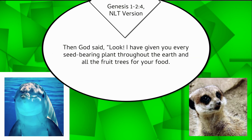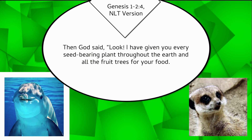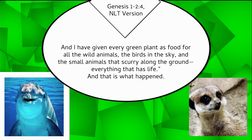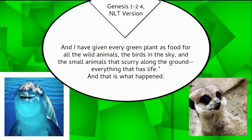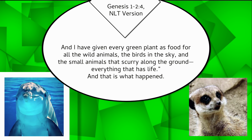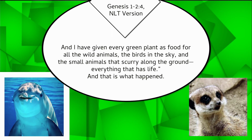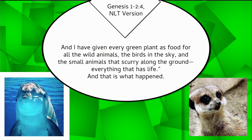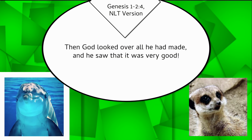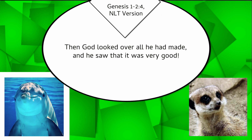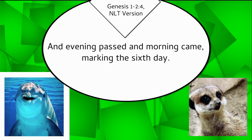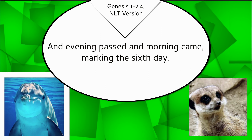Then God said, Look, I have given you every seed-bearing plant throughout the earth and all the fruit trees for your food. And I have given every green plant as food for all the wild animals, the birds in the sky, and the small animals that scurry along the ground — everything that has life. And that is what happened. Then God looked over all He had made, and He saw that it was very good. And evening passed, and morning came, marking the sixth day.